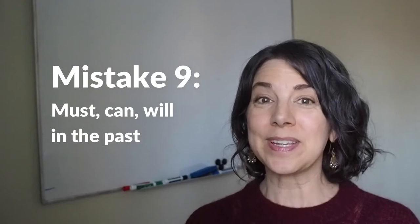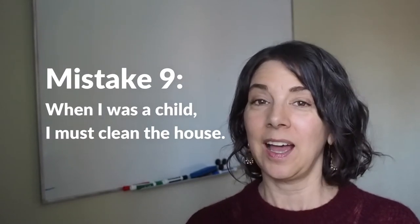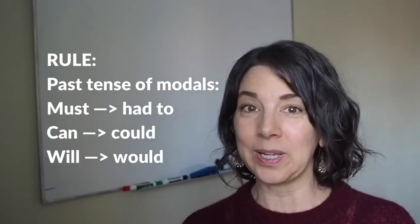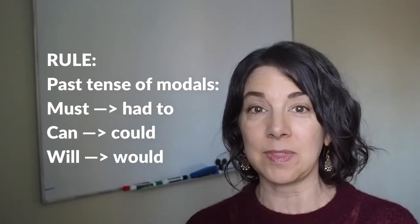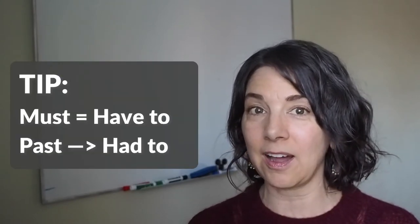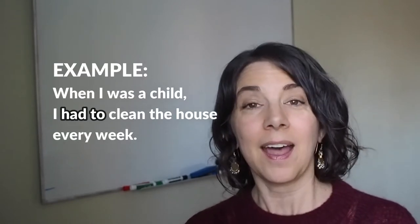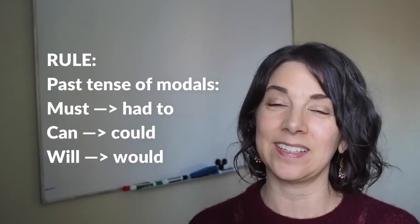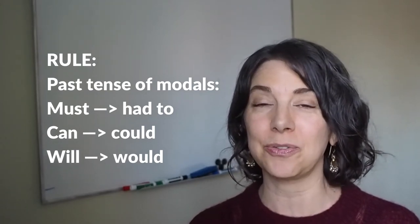Number nine: using the wrong modal verb in the past. For example, when I was a child, I must clean the house every week. The verbs must, will, and can have past tense forms. Remember that must means the same thing as have to. I must clean the house. I have to clean the house. In the past, we say I had to. We cannot use must in the past. When I was a child, I had to clean the house every week. How about can? The past tense of can is could. And will, the past tense is would.